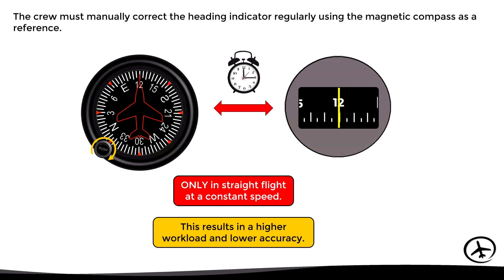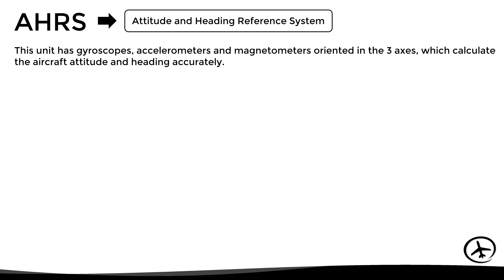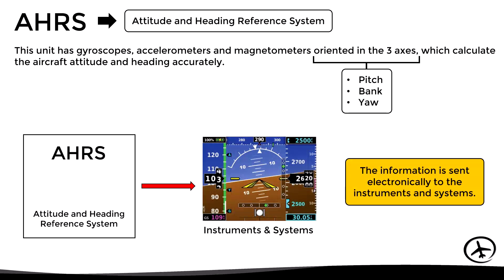These conventional gyroscopic instruments tend to have low accuracy and several disadvantages. To improve the accuracy and functionalities of the system, the Attitude and Heading Reference System was developed, abbreviated as AHRS. This unit has gyroscopes, accelerometers, and magnetometers oriented in the three axes. These sensors calculate the aircraft attitude and heading accurately in real time based on the measurement of pitch, bank, and yaw movements. The information is then sent electronically to the relevant instruments and systems.